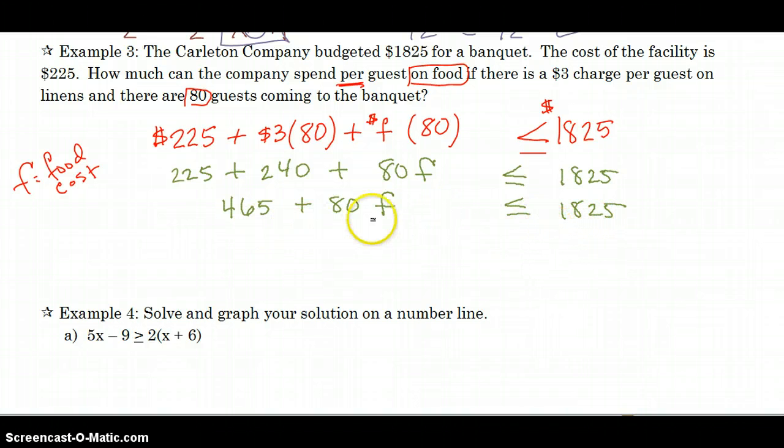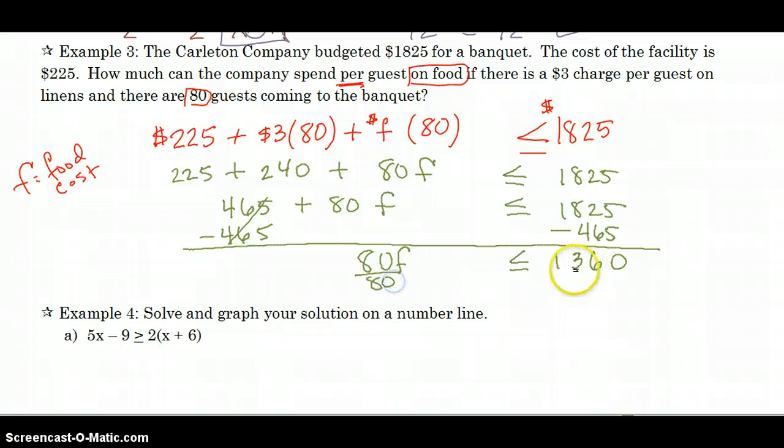So now I'm ready to isolate my F. So subtract 465 from both sides. I'm subtracting not multiplying or dividing. Subtraction is not any cause for alarm. And 1825 minus 465 gives me 1360 if I did my math correct. And I'm going to divide both sides by 80. And F, the cost of food should be less than or equal to 17.